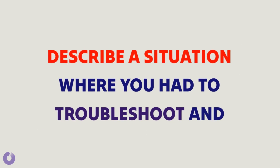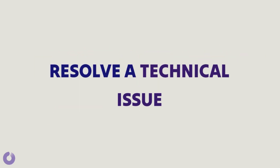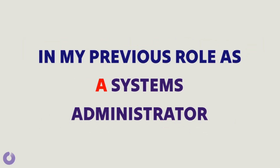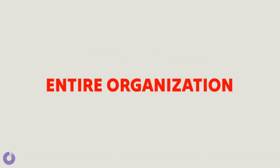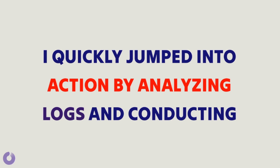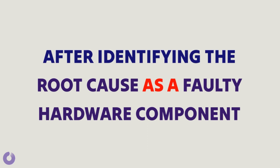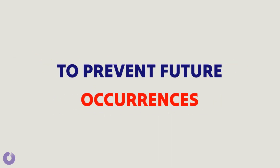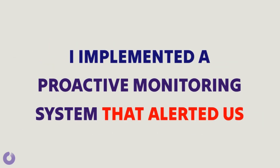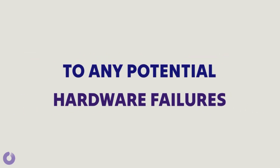Question 1: Describe a situation where you had to troubleshoot and resolve a technical issue. Sample answer 1: In my previous role as a systems administrator, we encountered a critical server outage that affected our entire organization. I quickly jumped into action by analyzing logs and conducting thorough diagnostics. After identifying the root cause as a faulty hardware component, I promptly replaced it and restored the server's functionality. To prevent future occurrences, I implemented a proactive monitoring system that alerted us to any potential hardware failures, allowing us to address them before they impacted our operations.